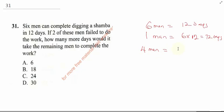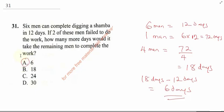If four men now did the job, that would be 72 days divided by 4. Four into 7 is 1 carry 3, four into 32 gives 18. So that's 18 days. How many more days would it take the remaining men to complete the work? 18 days minus 12 days gives you 6 days. So because two men dropped, it will take them an extra 6 days to complete the work.